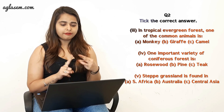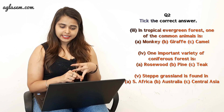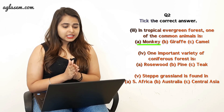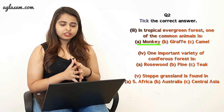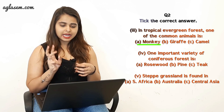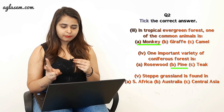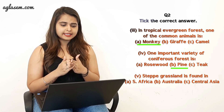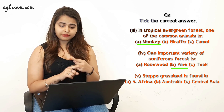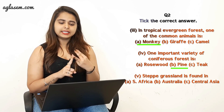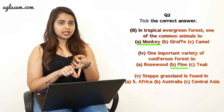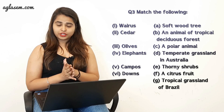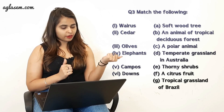The third part asks: in tropical evergreen forests, one of the common animals is monkey, giraffe, or camel. The answer is monkeys. The fourth part asks: one important variety of coniferous forest tree is rosewood, pine, or teak. The answer is pine. The fifth part asks: steppe grassland is found in South Africa, Australia, or central Asia. The answer is central Asia.